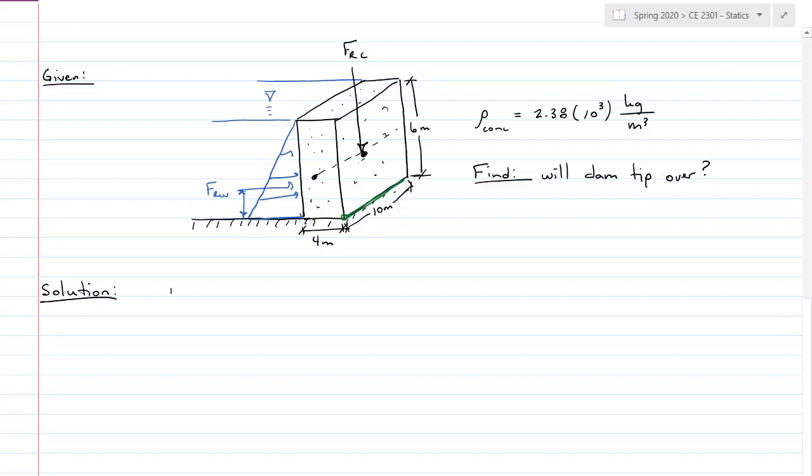The resultant force of the water is going to be, let's see, my base pressure is equal to gamma times H, which is going to be 9.81 kilonewtons per meter cubed times 6 meters, and that's equal to 58.86 kilonewtons per meter squared. So the resultant force of my water, the area of a triangle, one-half base, 58.86 kilonewtons per meter squared, times height, 6 meters.